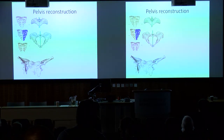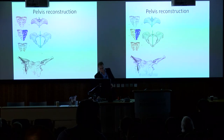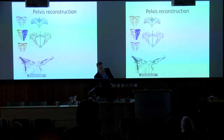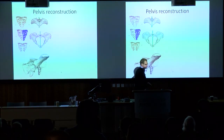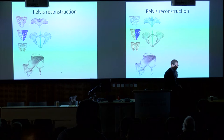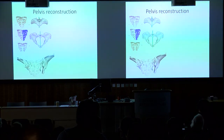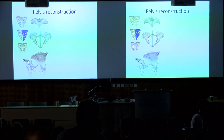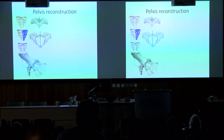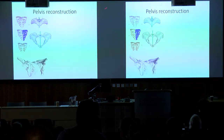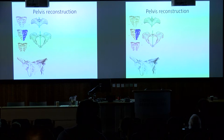Many of you have seen the 3D print of the pelvis in real life — this is what it looks like from all angles on a computer; it's rigged for 3D printing. What we did was take the sacrum, cut it in half virtually, and mirror it. From the sacrum we established a central line.